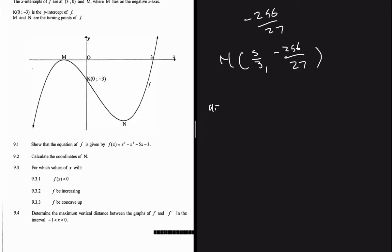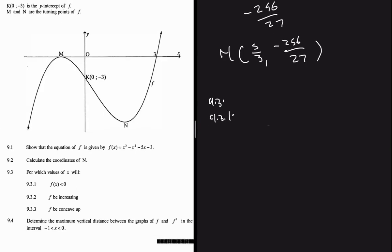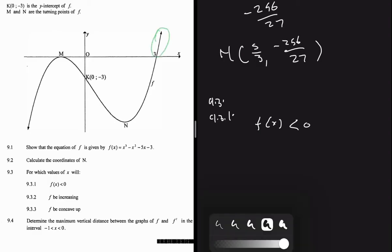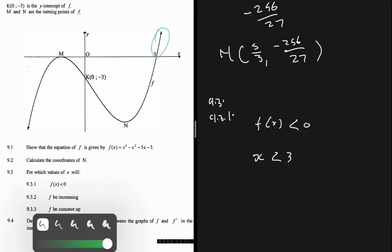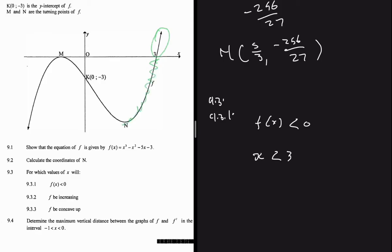Moving to question 9.3.1: for which values of x will f(x) be less than zero? We can see that f(x) is greater than zero when x is greater than 3. So when x is less than 3, f(x) is less than zero — it is clear from the graph that this holds throughout that region.